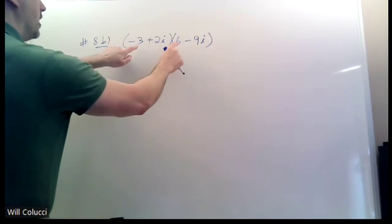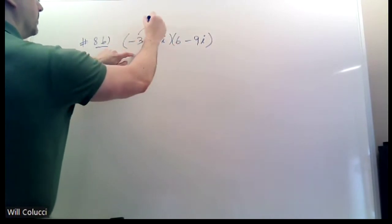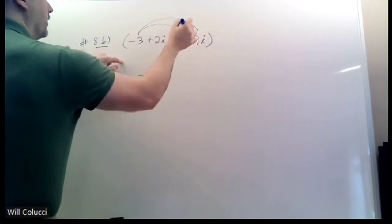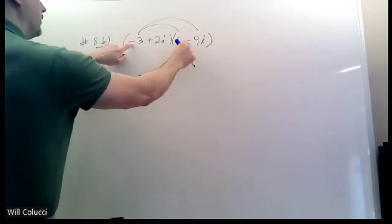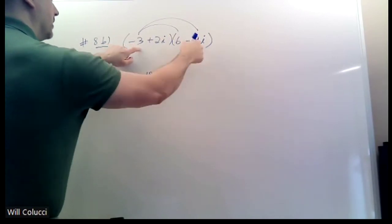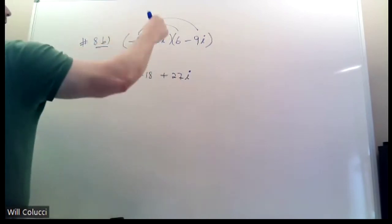Multiply the first. Negative 3 times 6 is negative 18. No problem. Easy. Over here, be very careful. Negative 3 times negative 9 is positive 27. And you have the i that goes along to the right. So that's first outer.